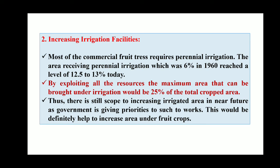Increasing irrigation facilities is another scope. Most commercial fruits require perennial irrigation. The area receiving perennial irrigation was six percent in 1960 and has reached 12.5 to 13 percent today. By exploiting all resources, the maximum area that can be brought under irrigation would be 25 percent of the total crop area, so there is still scope to increase from the current 13 percent to 25 percent. Government is giving priority to this, which will help increase the area under fruit crops.